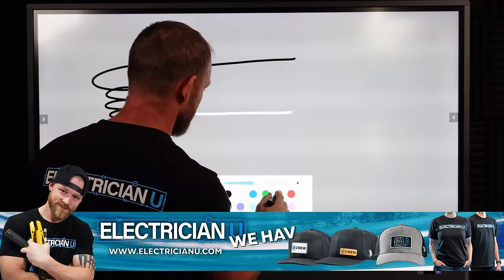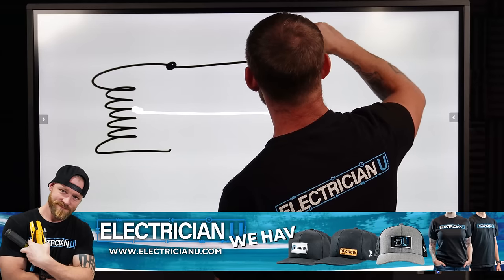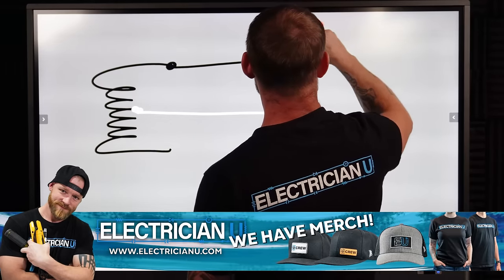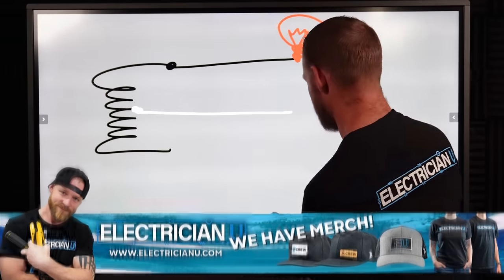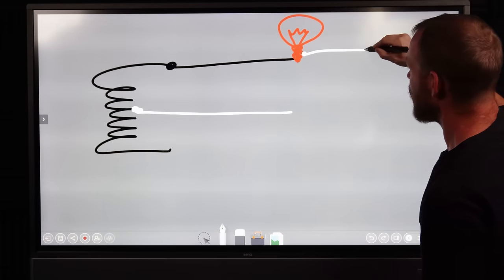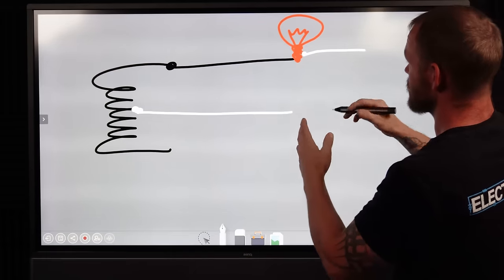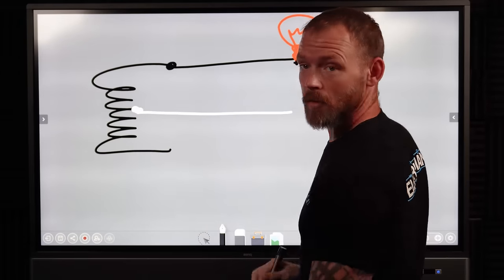So let's say that we've got a light bulb right here. We're on the bottom of the screw shell of the light bulb and we've got the light bulb filament and then off the screw shell we have a white. Your hot always goes to the bottom of the light bulb.